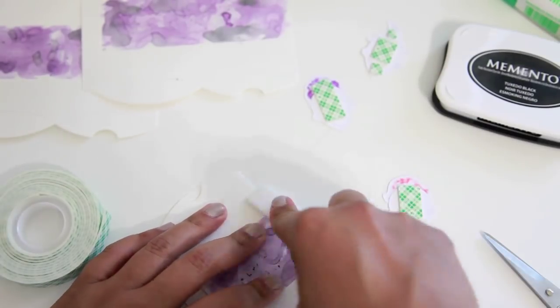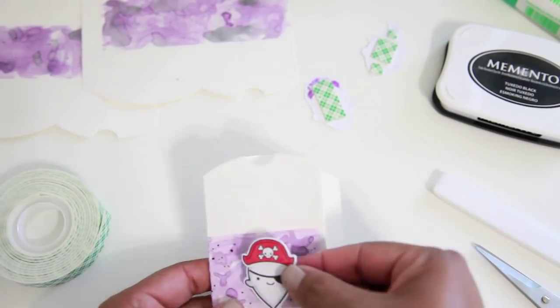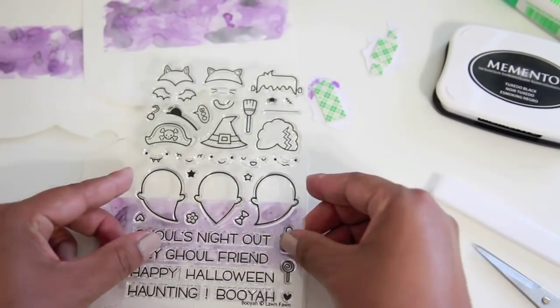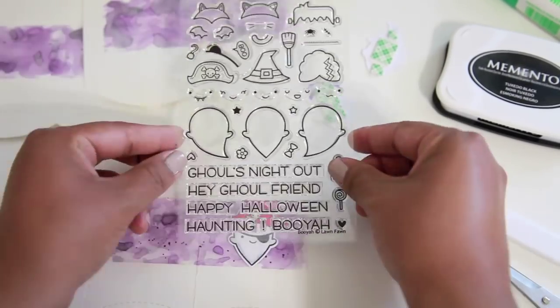Okay, so now I'm just going to go ahead and fold this just so I could get a look at exactly where to place it. And then so I could also know how much room I have for the sentiment. So I'm going to be stamping Happy Halloween.